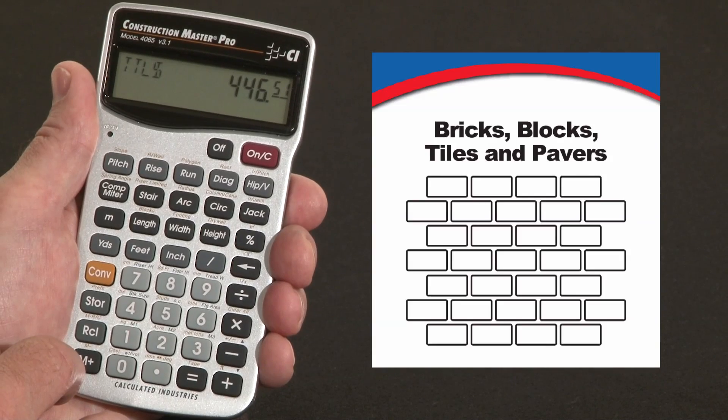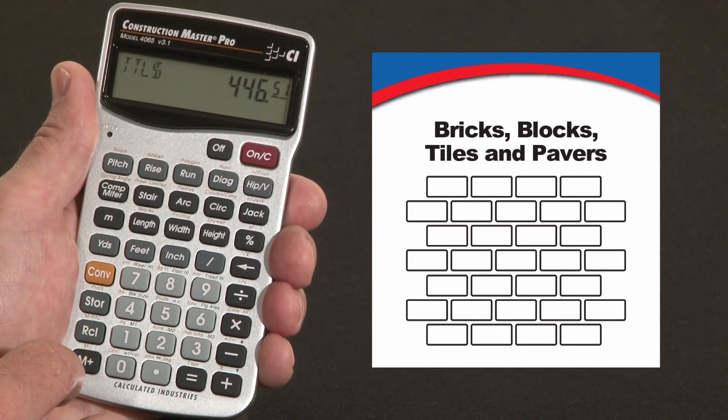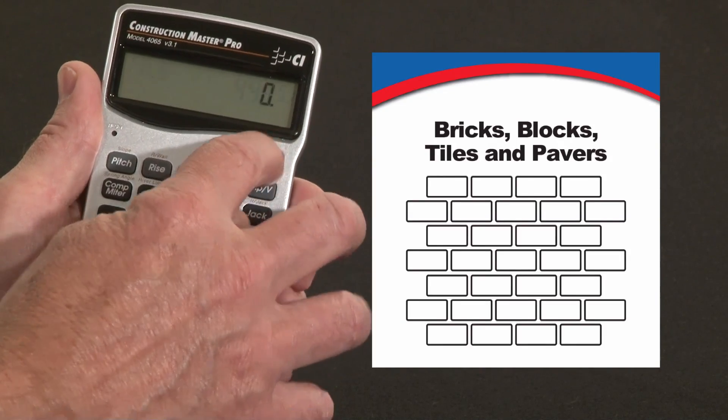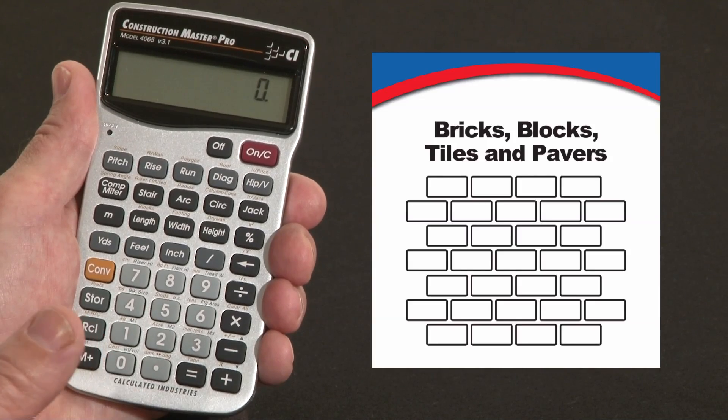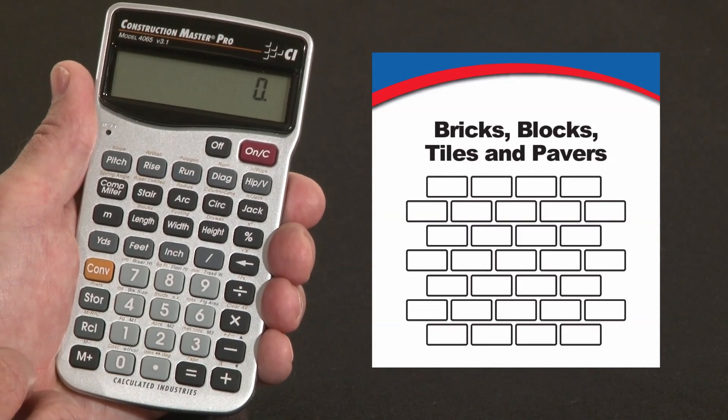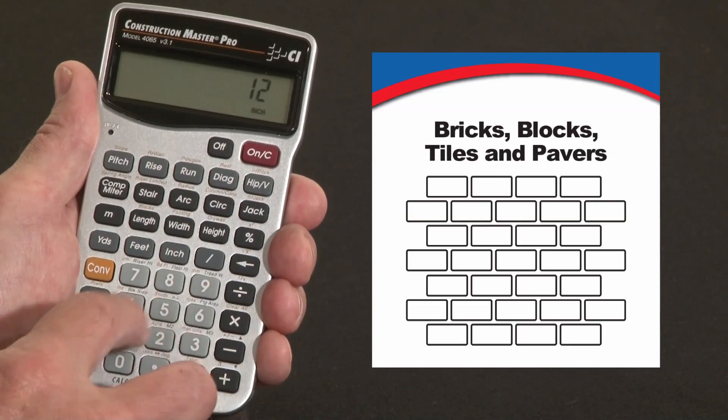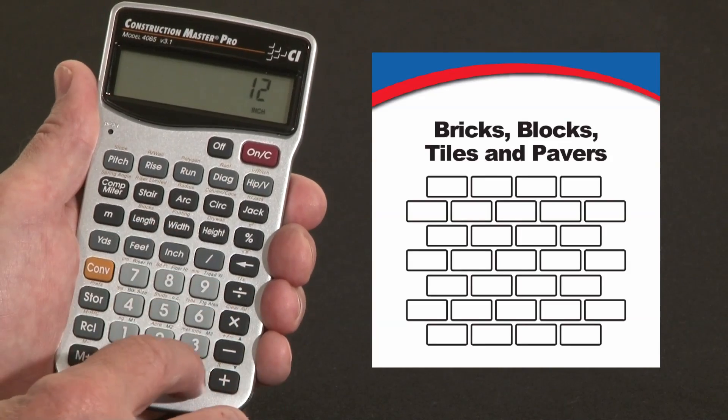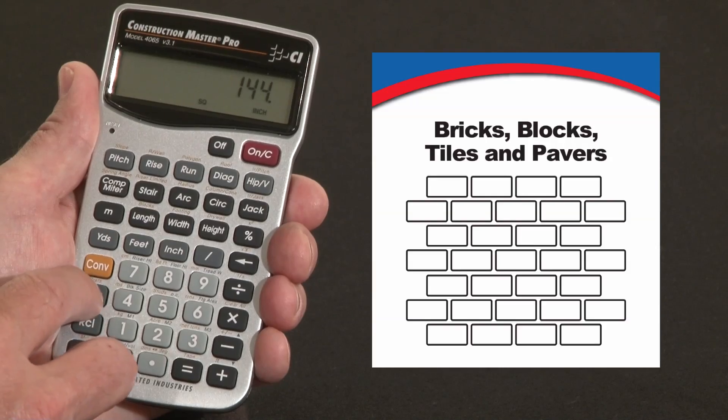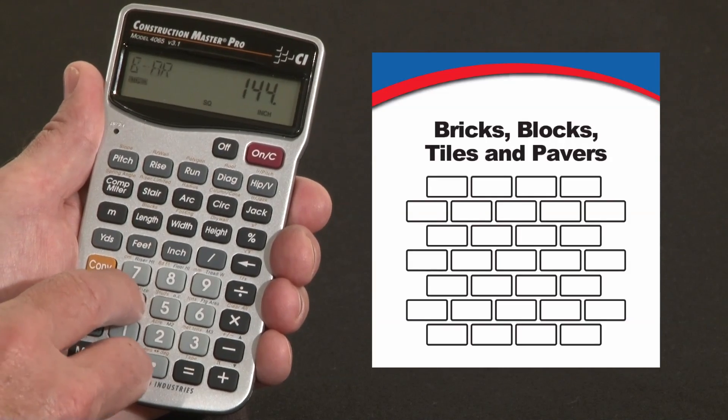Now you can also use this function for other size blocks or bricks or tiles. I'll do one that's very simple for you to understand. Say we've got a 12 inch square tile we're going to put on a 100 square foot patio. So we have 12 inches by 12 inches, 144 square inches. We're now going to store that as our block area.